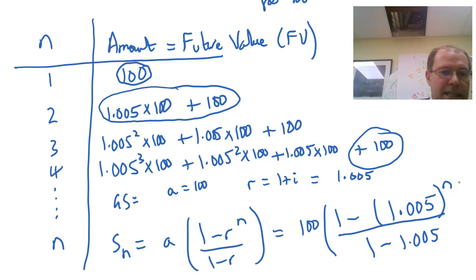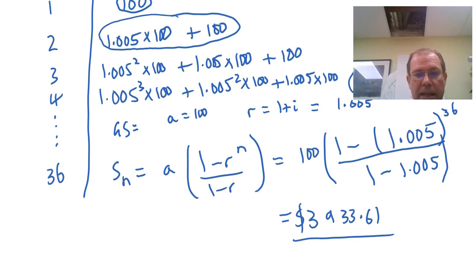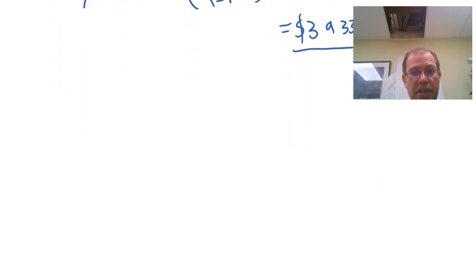So the sum of the first N terms is going to be equal to A, which is 100, times 1 minus R to the N, so 1 minus 1.005 to the power N over 1 minus R, 1 minus 1.005. But we know N is actually 36 over three years. So I could put 36 in there, and using your calculator carefully, you should be able to get the answer, $3,933.61. And that's how to work out an ordinary annuity.